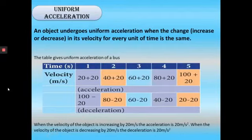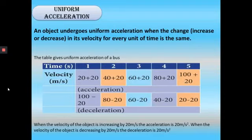An object undergoes uniform acceleration when the change in its velocity for every unit of time is the same. The table gives uniform acceleration of a bus: when the velocity increases by 20 meter per second each interval, the acceleration is 20 meter per second; when it decreases by 20 meter per second, the deceleration is 20 meter per second.